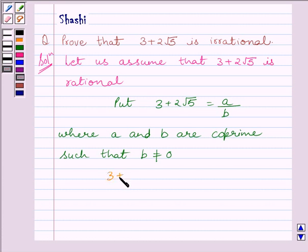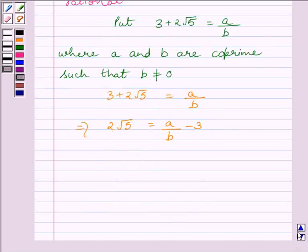Now, 3 plus 2 root 5 is equal to A upon B implies 2 root 5 is equal to A upon B minus 3. This implies 2 root 5 is equal to A minus 3B upon 2B.